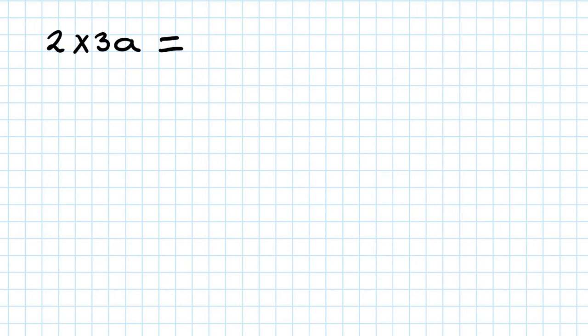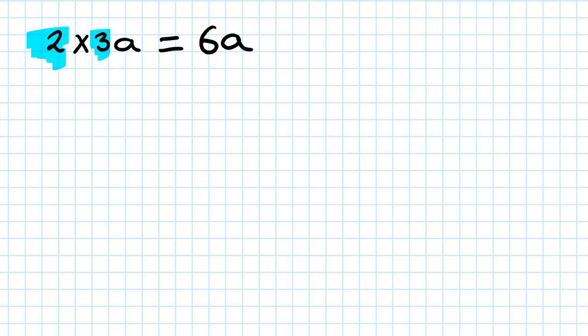To simplify these kinds of expressions, what we need to do is multiply numbers with numbers and pronumerals (letters) with letters - that's all you need to do. For example, 2 times 3a: 2 times 3 is 6, so the answer is 6a.